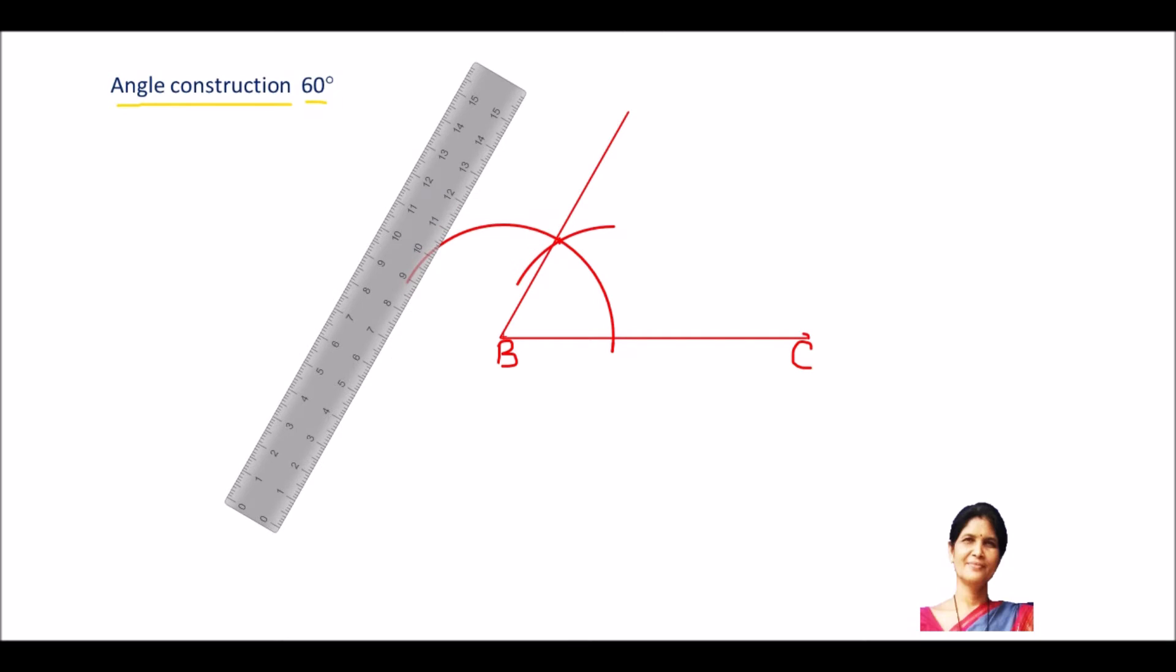So, I am keeping the scale also in the box. Next, I will name the angle. This is A and ABC is equal to 60 degree. I can write here. This is the measure of the angle 60 degree.